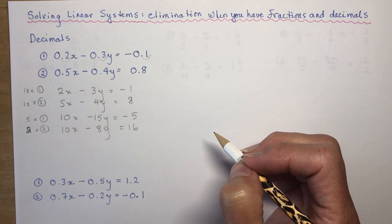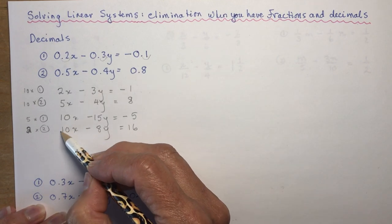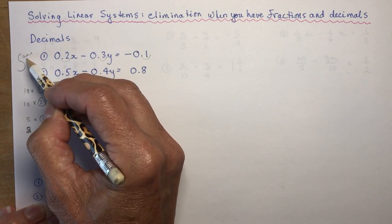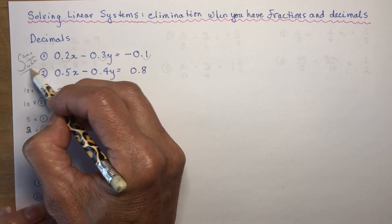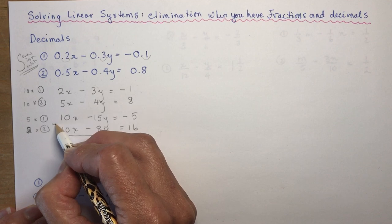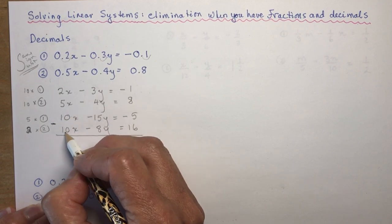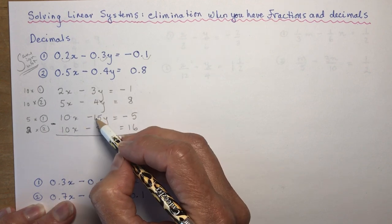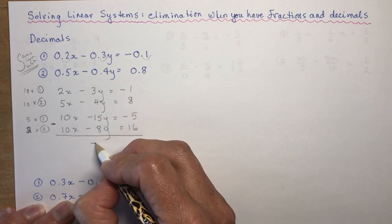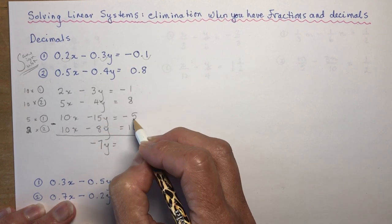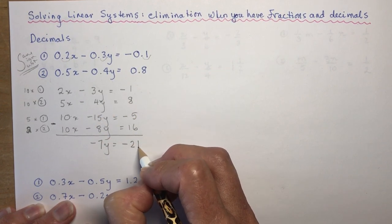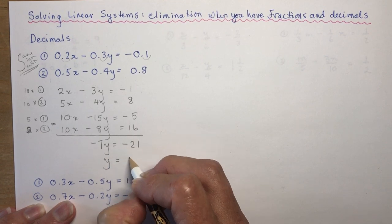Now I can eliminate. Remember: same sign — subtract. That's an easy way to remember what to do. So I subtract and the x-terms cancel. Minus 15y minus (minus 8y) is minus 15 plus 8, giving minus 7y. And minus 5 minus 16 gives minus 21.